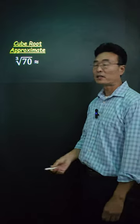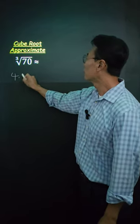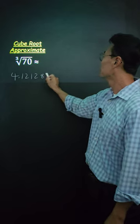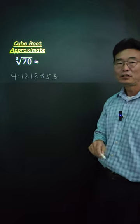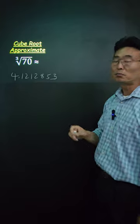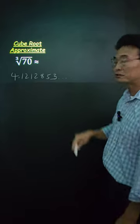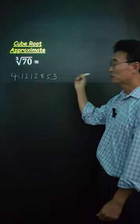If you put cube root of 70 in the calculator, it'll give you 4.1212853, but since that's an irrational number, it means it goes on forever. Your calculator just doesn't show you the rest.